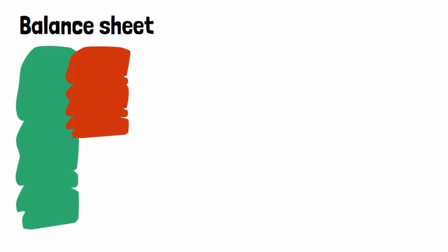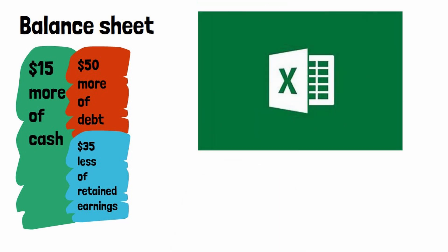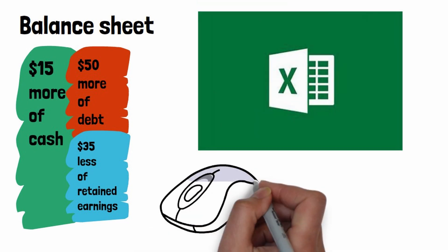On the balance sheet, there's $15 more cash, $50 more debt, and $35 less of retained earnings.